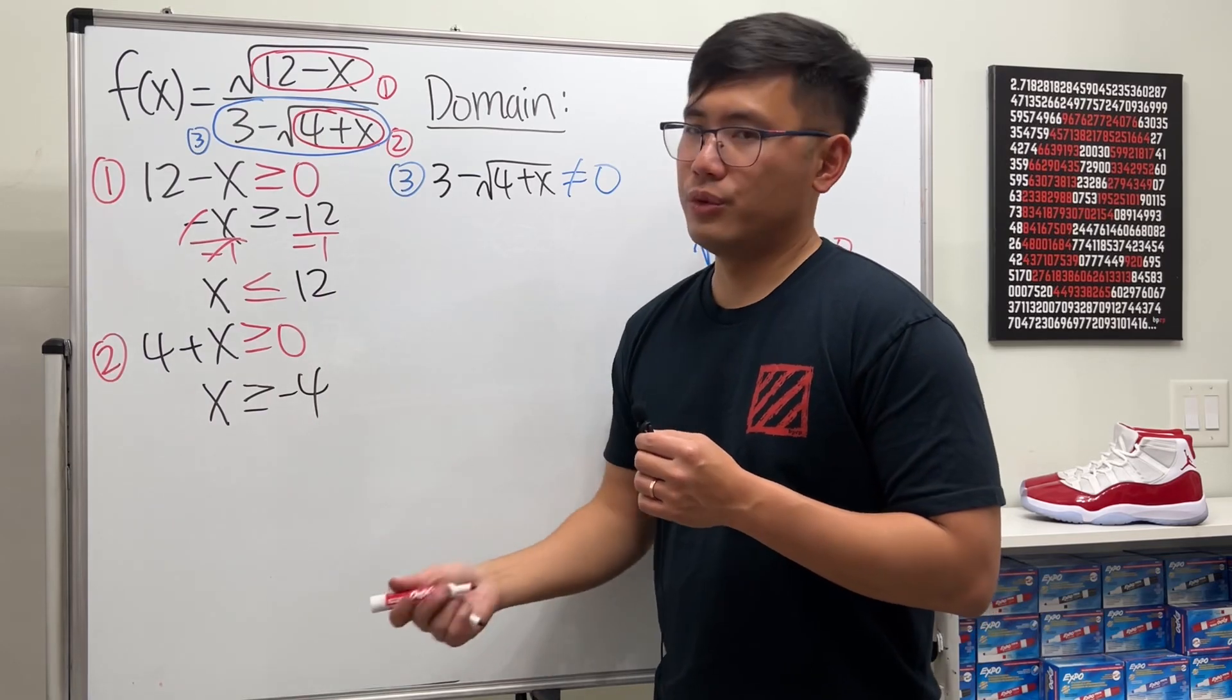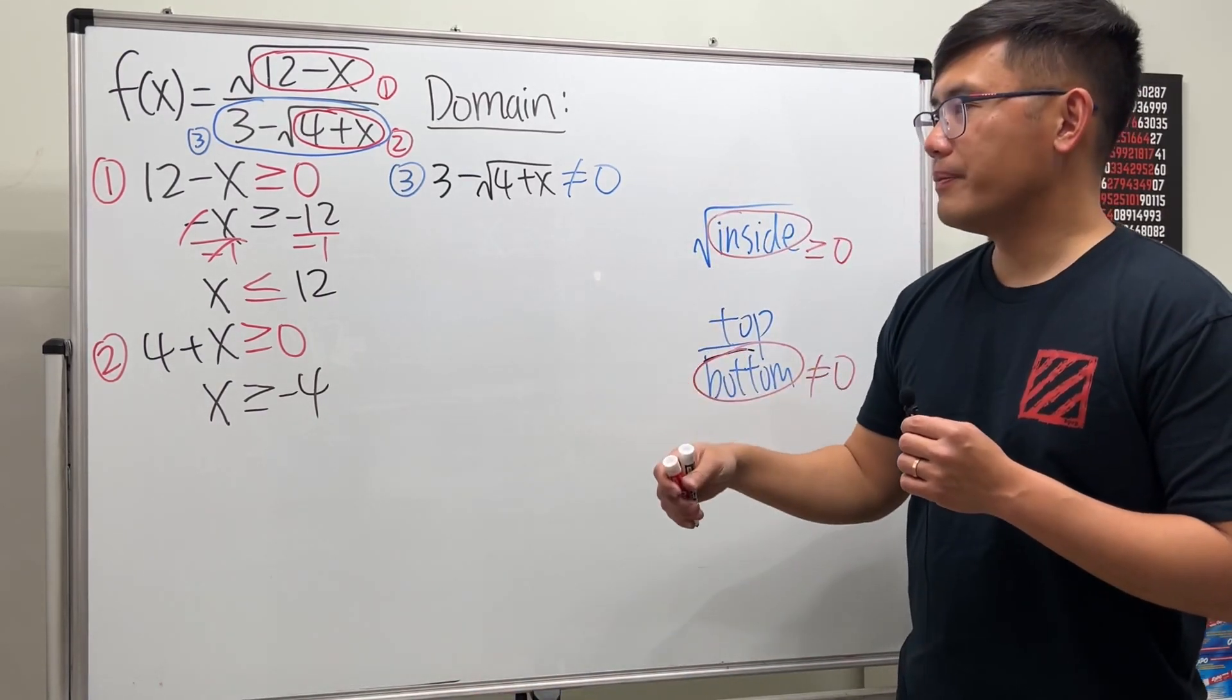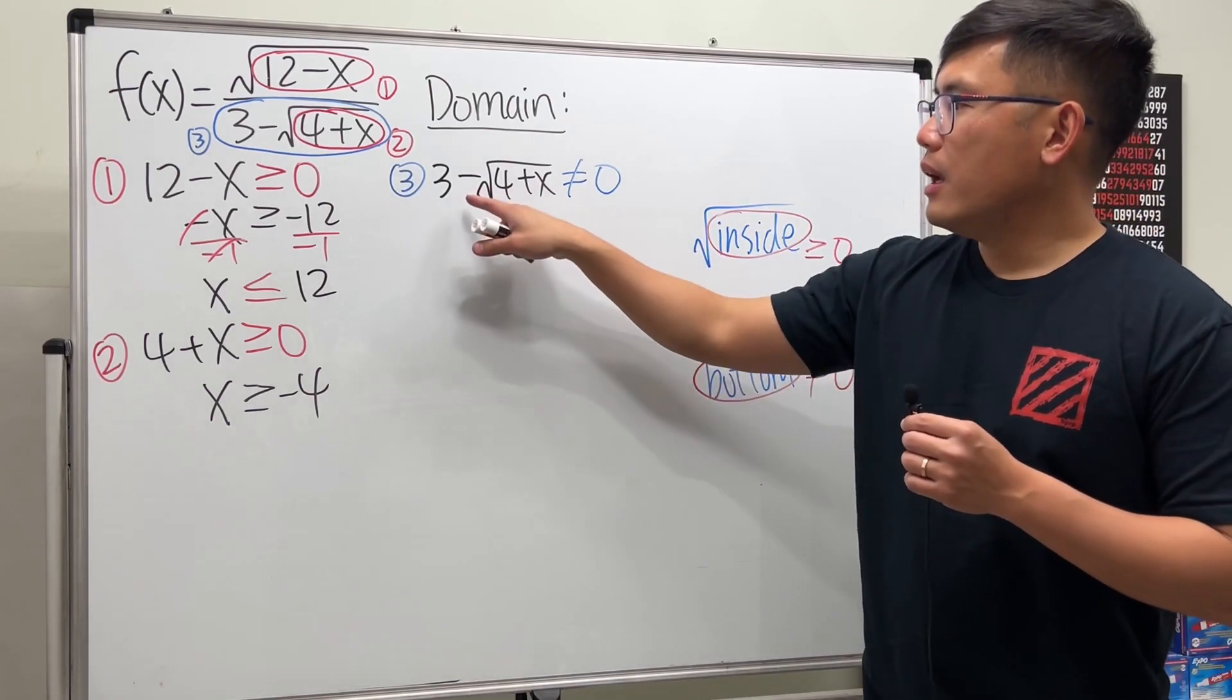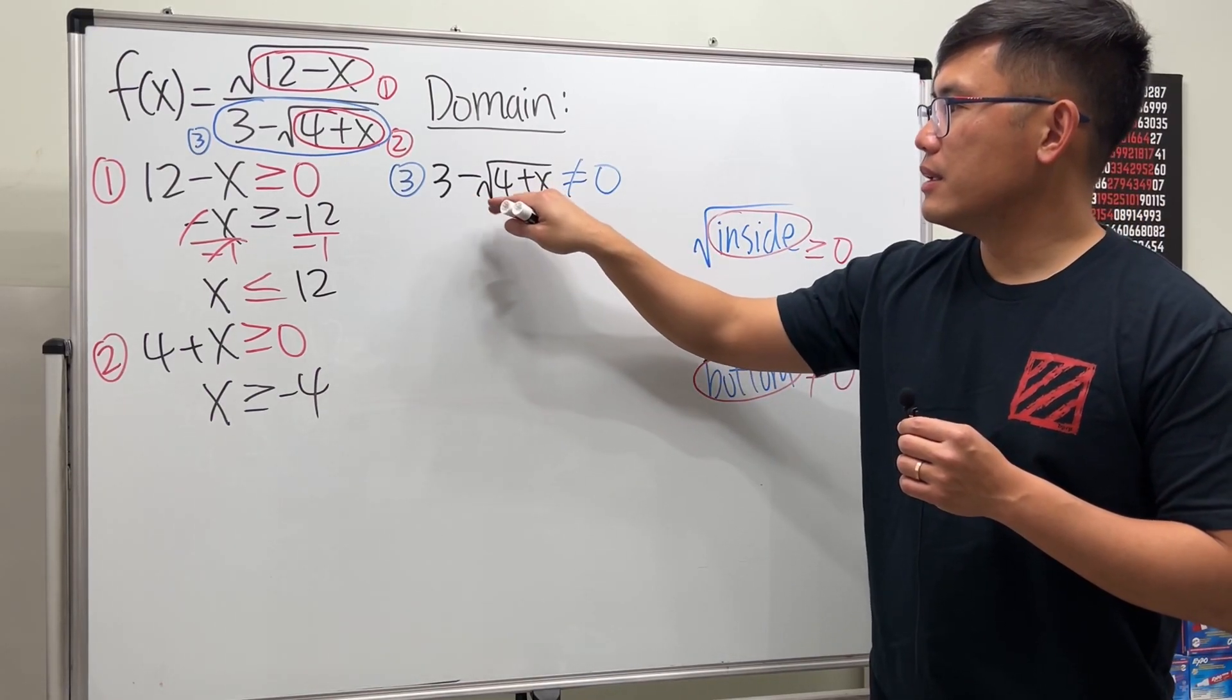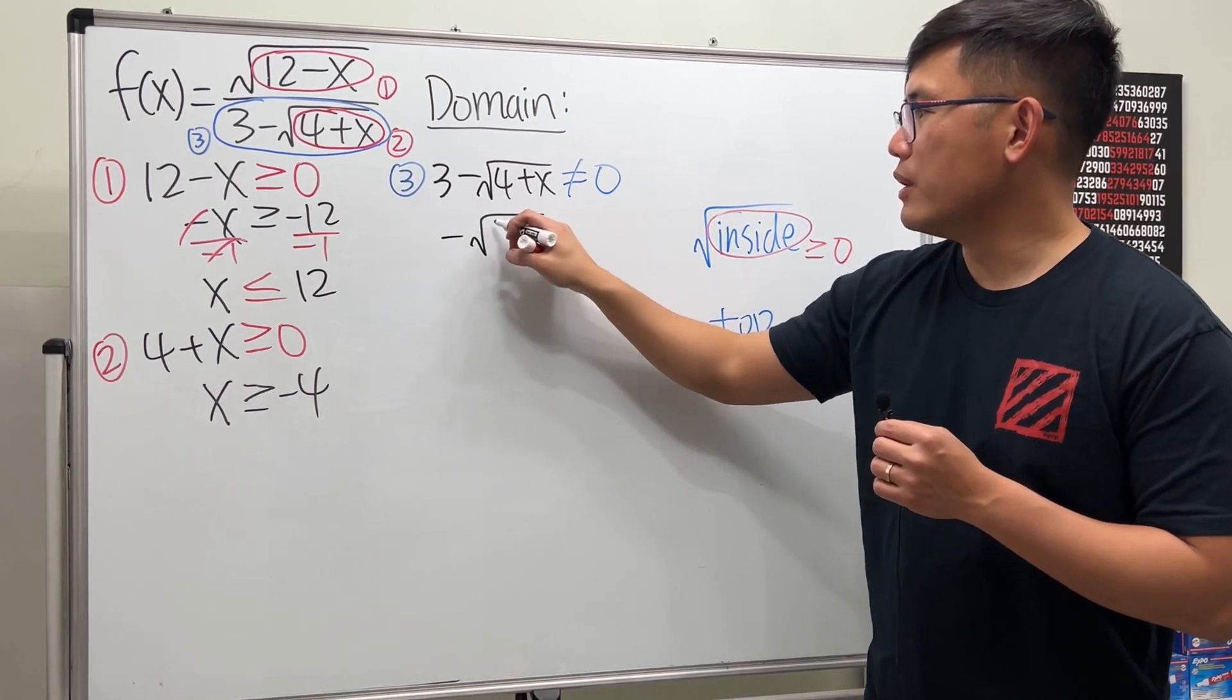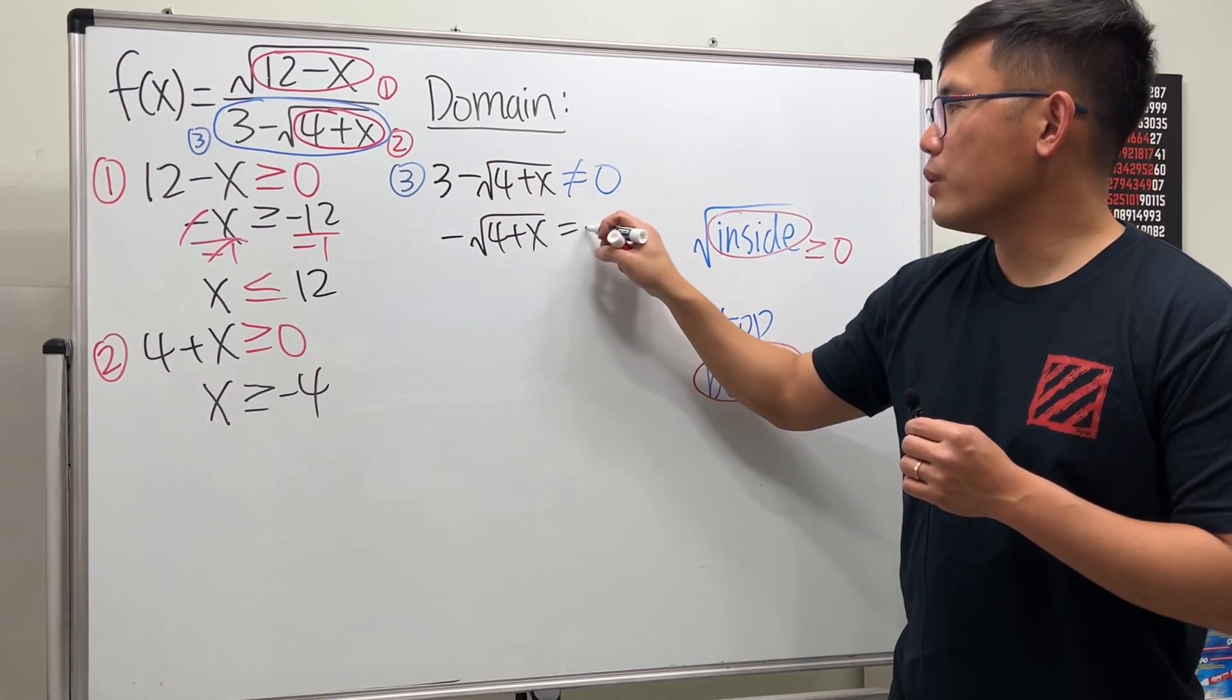Condition 1, condition 2 done. Now for this, we have to solve the equation and put a not equal sign. Let's put this part right here. Let me just show you guys all the steps, so negative square root of 4 plus x equals negative 3.